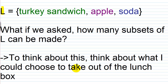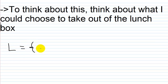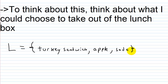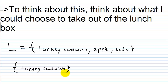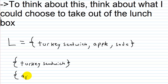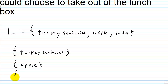Think about what I could choose to take out of the lunch box. I could just take out a turkey sandwich — that is one subset. I could just take an apple, and I could also just take a soda. So far, I have at least three subsets, because I have three subsets that contain exactly one element.